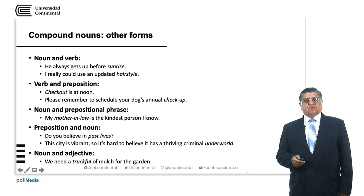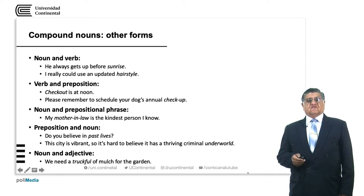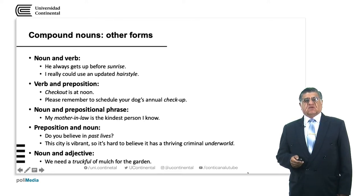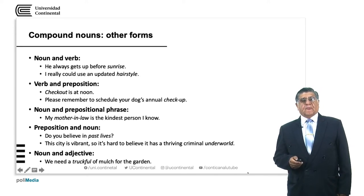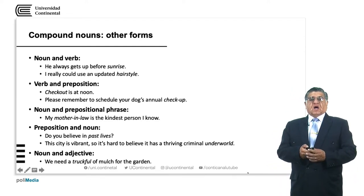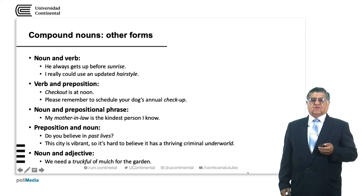Preposition and noun: 'Do you believe in past lives?' Past is very obvious and live is also obvious. Past lives means something that happened before you are living at the moment. 'This city is vibrant, so it's hard to believe it has a thriving criminal underworld.' Under means below; underworld means something that is not shown, probably hidden.